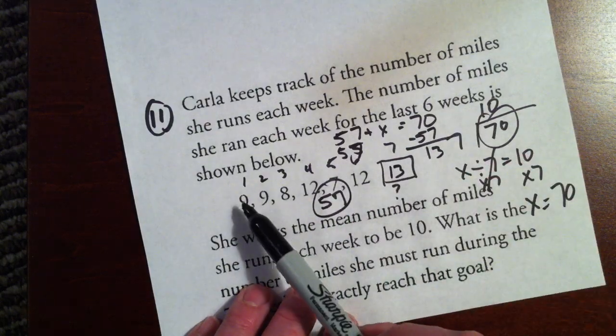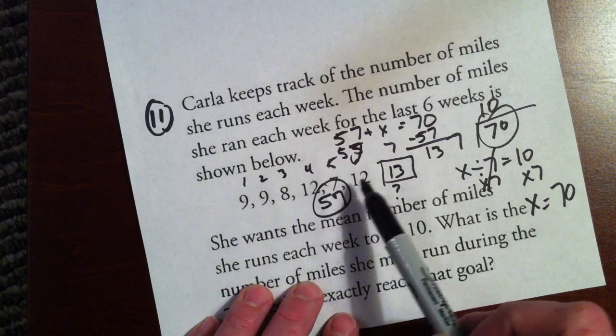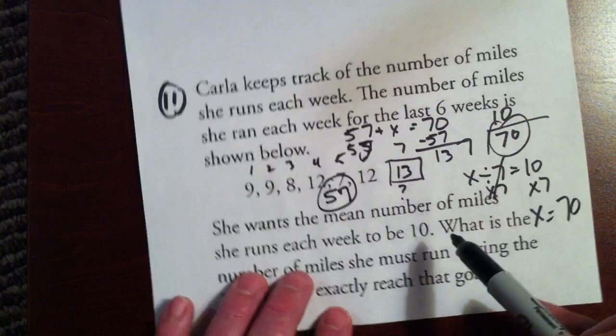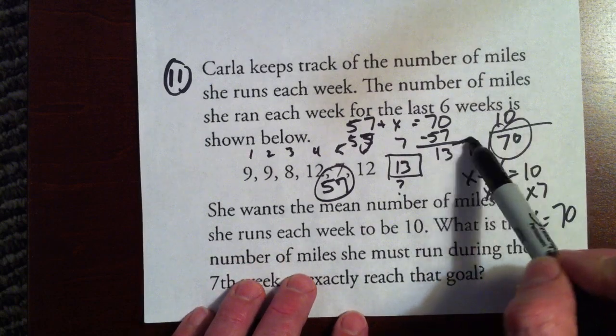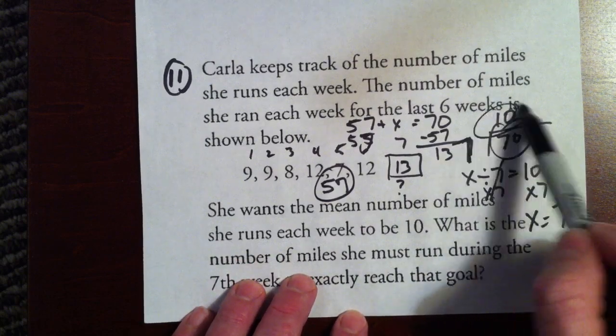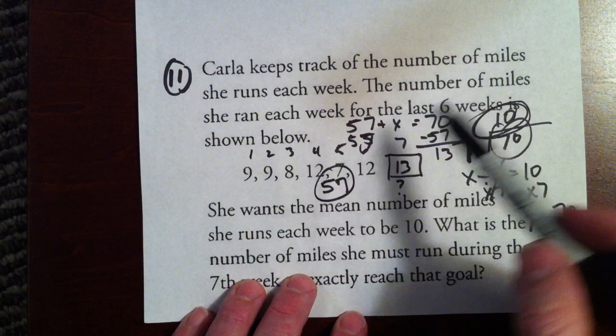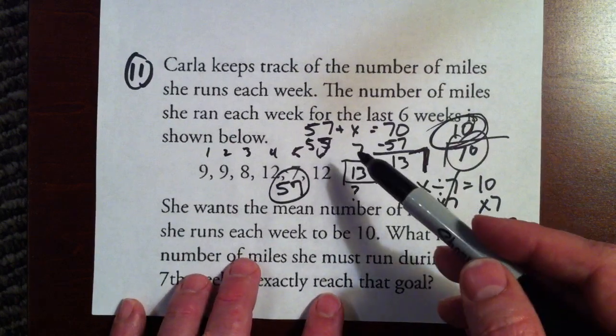And how we can check that is simple. We would add up 9, 9, 8, 12, 7, 12, and 13, add them all up, divide by 7, which is the total number of data points we have, and we will get 10. This is a multi-step problem, but this is something you're going to have to know how to do.